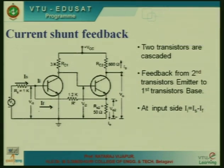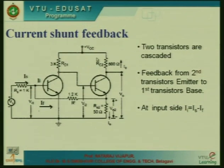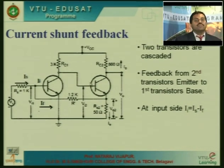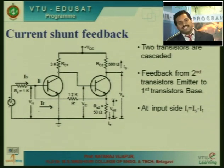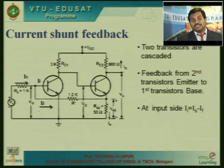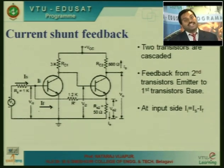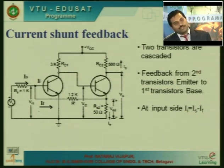The main objective of this session is to discuss the practical circuits involving current shunt feedback. Here we have one example: two transistor amplifiers connected in cascade, such that the output of one amplifier acts as an input to the next amplifier. We need to connect amplifiers in cascade in many applications. The aim is to increase the current gain, increase the signal strength, and boost the signal or give enough power to the signal for practical applications such as driving a loudspeaker.